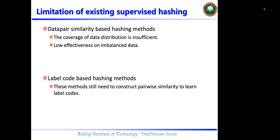It is impractical to exhaustively enumerate all possible data pairs or triplets. Thus, they only utilize partial relationships between data points to train the models, which harms the discriminability of the learned hash codes.